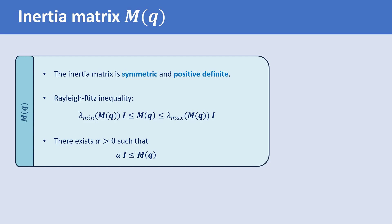If a robot has only revolute joints, then there exists a positive constant β such that M(Q) ≤ βI as well. This upper bound part of the inequality only holds for robots with revolute joints, but the lower bound holds for robots with either revolute or prismatic joints.